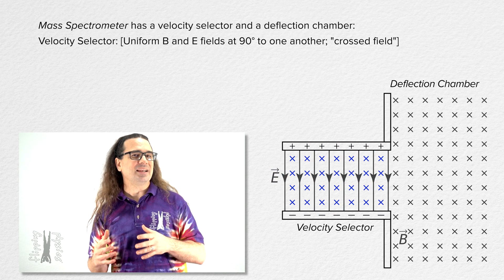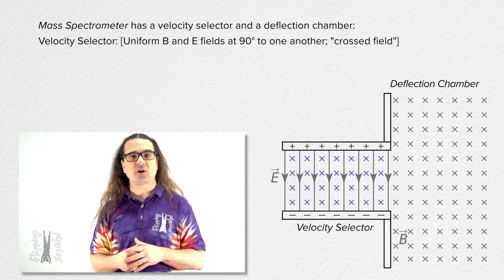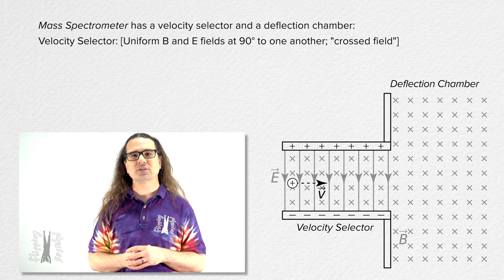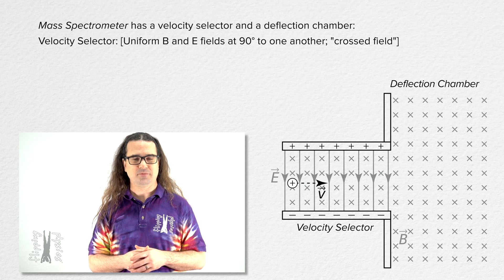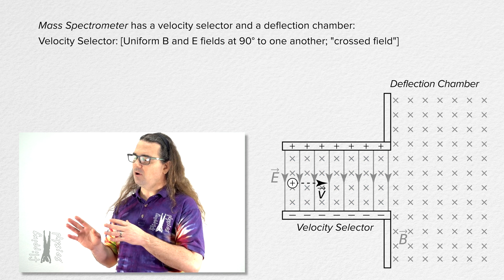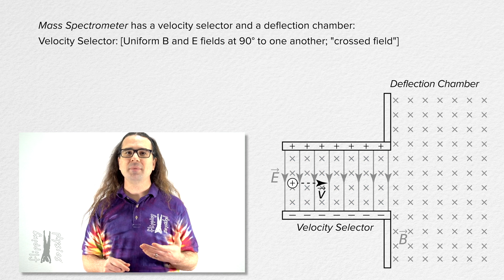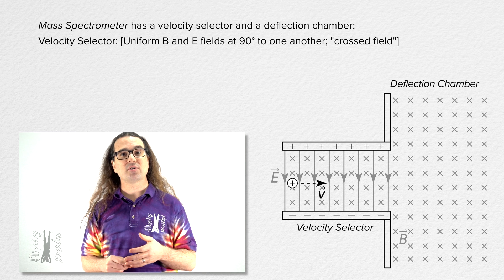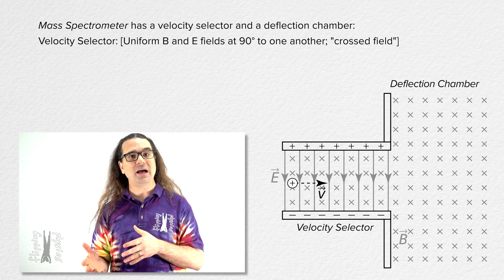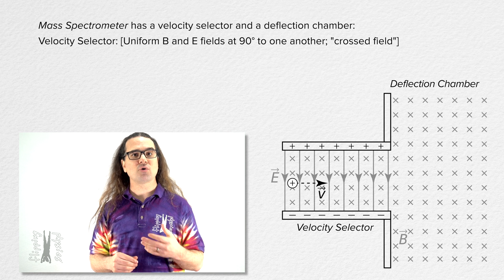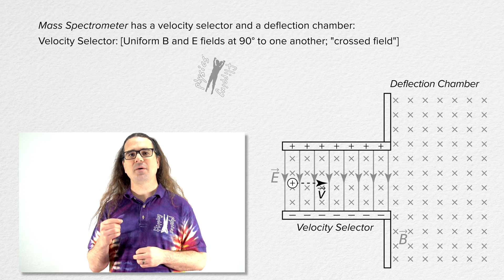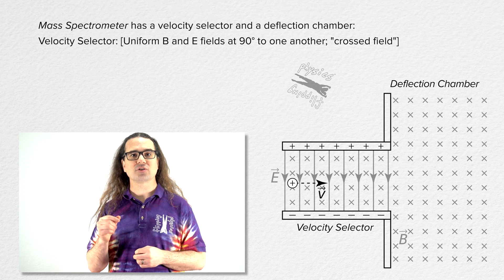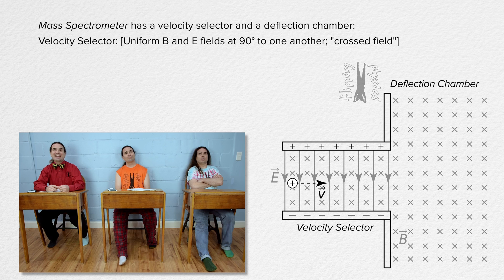We send a stream of charged particles horizontally into the velocity selector. Assuming the charged particle is positive and moving horizontally to the right, what forces are acting on the positively charged particle?